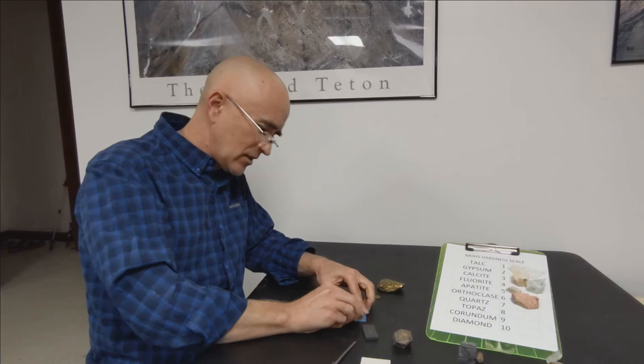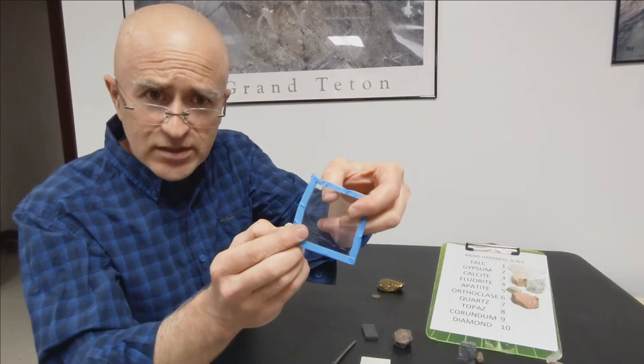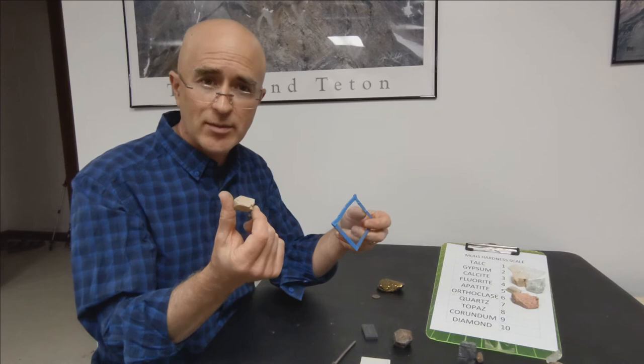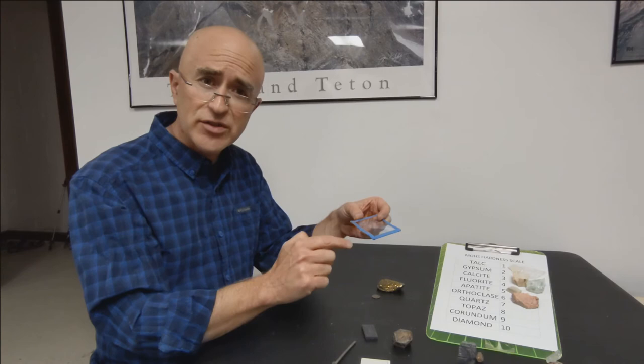But if I take it to the glass and I rub it against the glass, you can see that maybe it's a little hard to tell. But there's a couple little scratch lines along this glass that tells me the rock is harder than the glass, softer than the streak plate, that must put this somewhere in the neighborhood of a 6. Because the streak plate is 6.5, the glass is 5.5.